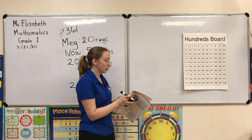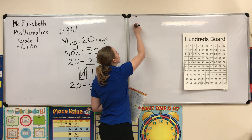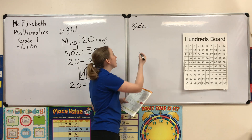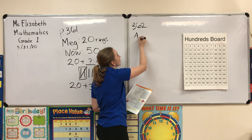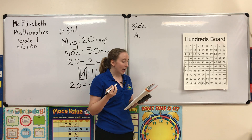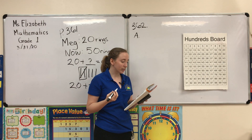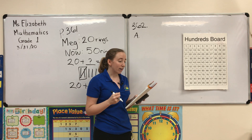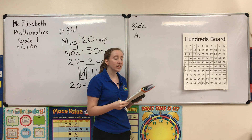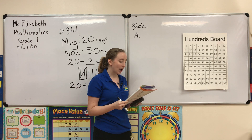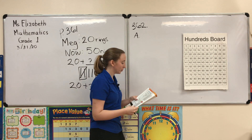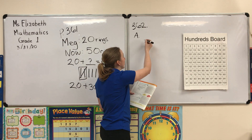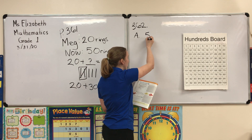Now turn your math books to page 362. We're going to start with A at the top of the page. It says: how can you use a hundreds chart to solve these problems? There are five blue hats and 22 red hats — how many hats are there all together? We're going to make an equation for this one. We know we have five blue hats.